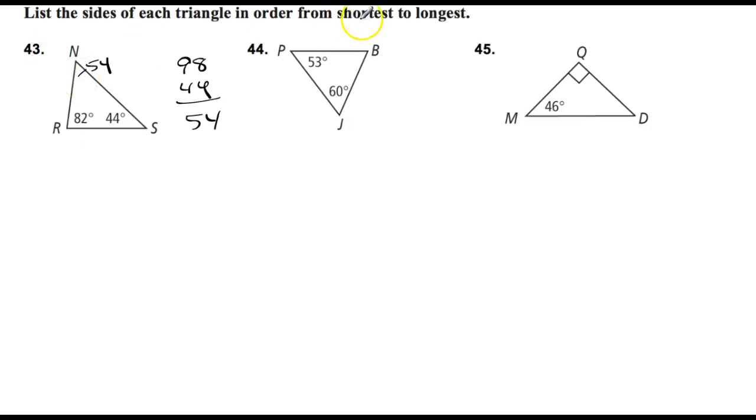And always keep in mind what they're asking for. Because sometimes they'll say go longest to shortest. Sometimes they'll say shortest to longest. Here they're saying shortest to longest. So start with the shortest angle, or the shortest side we're wanting. And remember, it's always across from the smallest angle. 44 is the smallest angle. So the side across from it is going to be NR.